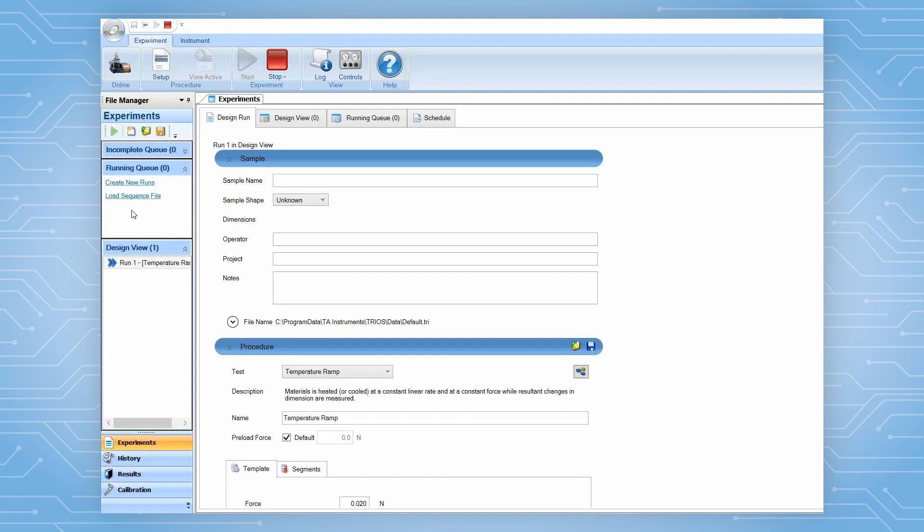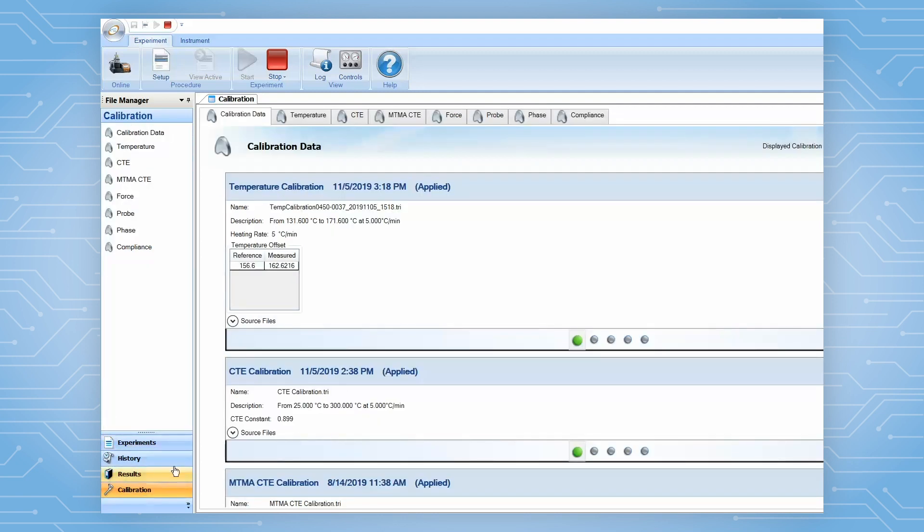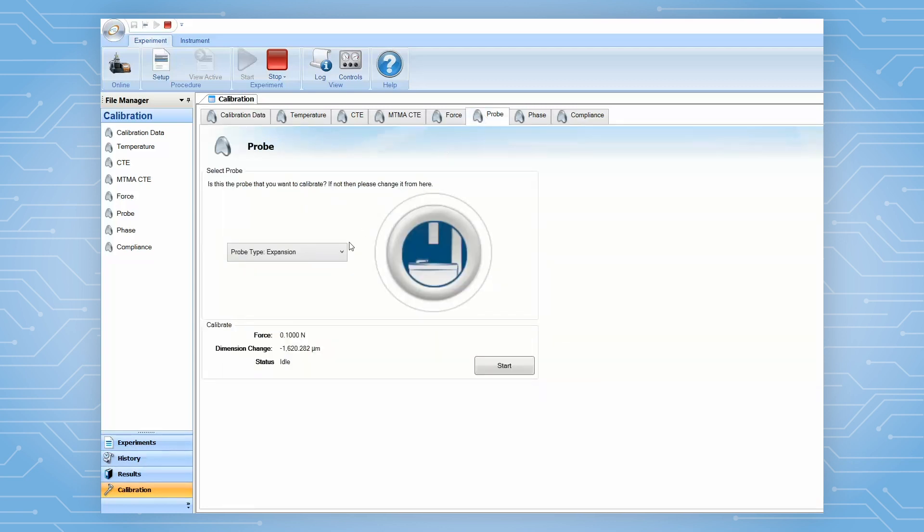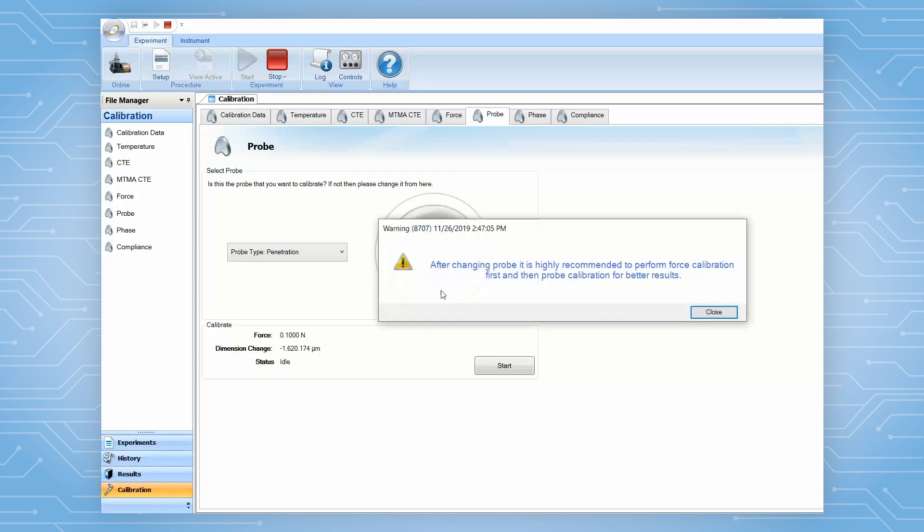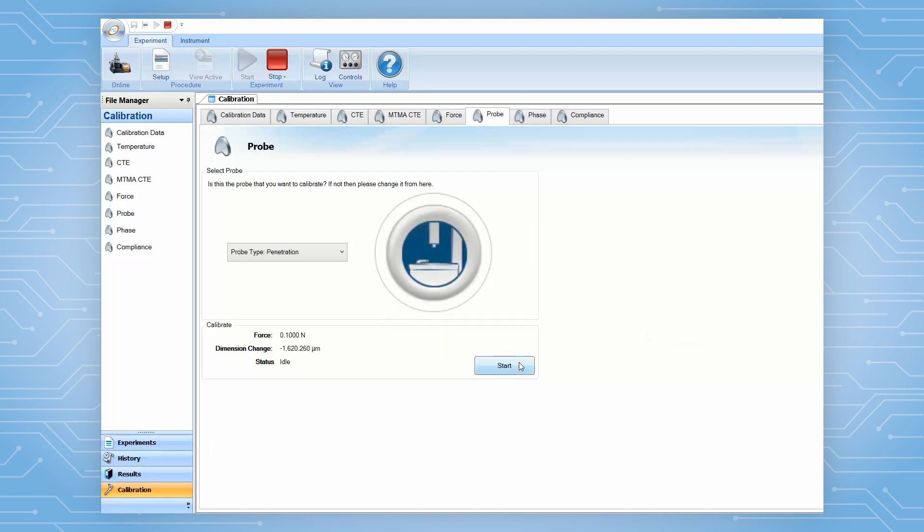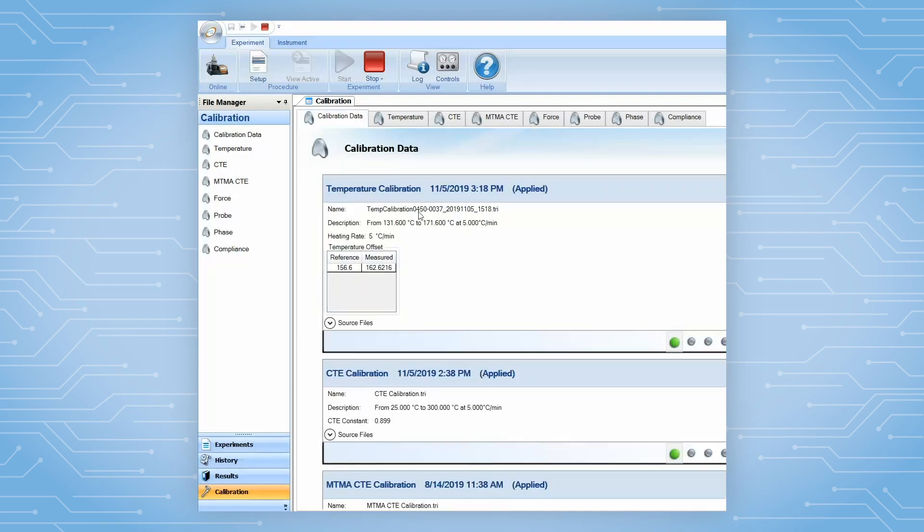You can also calibrate the probe from the TRIOS software by going to the File Manager Calibration panel, clicking on Probe tab, selecting the type of probe you will use, and clicking Start. When the probe calibration is complete, you can verify it on the Calibration Data tab.